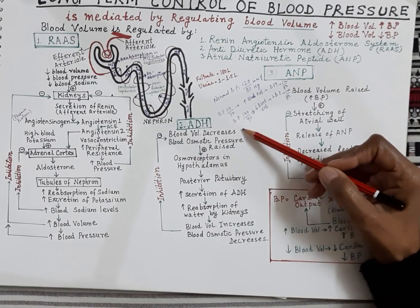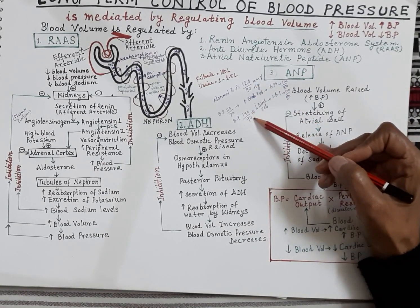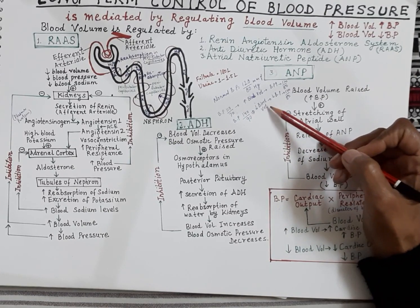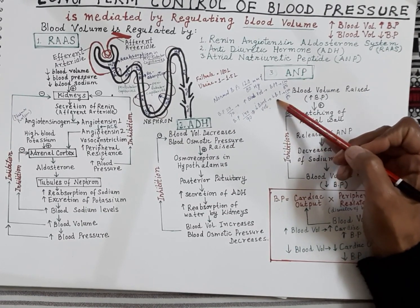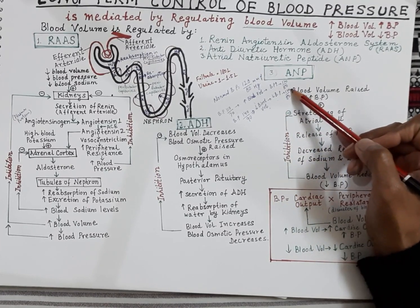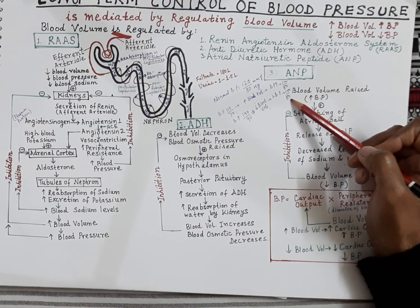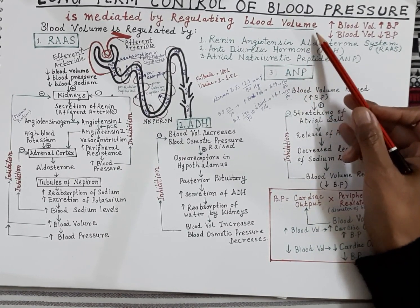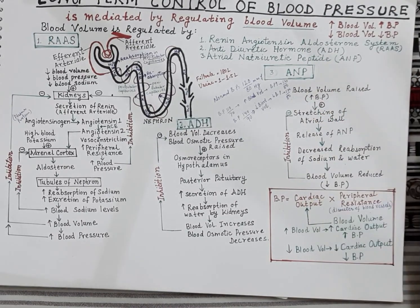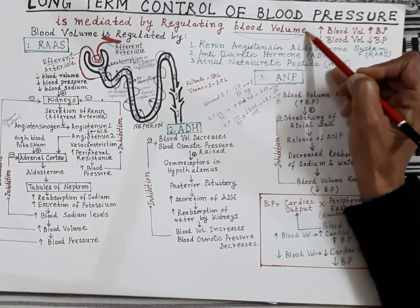Similarly, let's assume blood pressure increases from 120 by 80 to 140 by 90. Now the body reduces the blood volume. Blood volume reduce hua, cardiac output reduce hua, and blood pressure bhi kam hua — from 140 by 90 it comes back to 120 by 80. That is the normal blood pressure. So this is how blood volume controls blood pressure, and long-term control of blood pressure is mediated by controlling the blood volume.